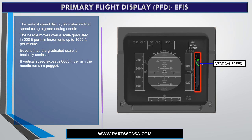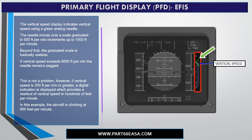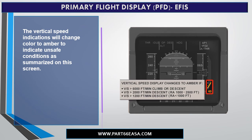The vertical speed display indicates vertical speed using a green analog needle. The needle moves over a scale graduated in 500 foot per minute increments up to 1,000 feet per minute. Beyond that, the graduated scale is basically useless. If vertical speed exceeds 6,000 feet per minute, the needle remains pegged. However, if vertical speed is 200 feet per minute or greater, a digital indication is displayed providing a readout of the vertical speed in hundreds of feet per minute. In this example, the aircraft is climbing at 900 feet per minute. The vertical speed indications will change color to amber to indicate unsafe conditions.